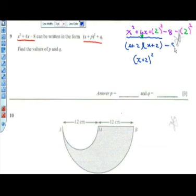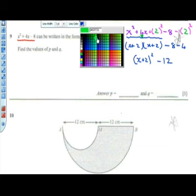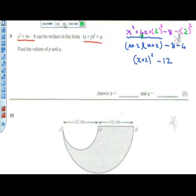But it can also be written as x plus 2 squared. Are you still with me? Yeah. Okay. And then that's minus 8 minus 4, which will give us minus 12. Okay, are you with me? Yeah. All right. So what is the value of p?